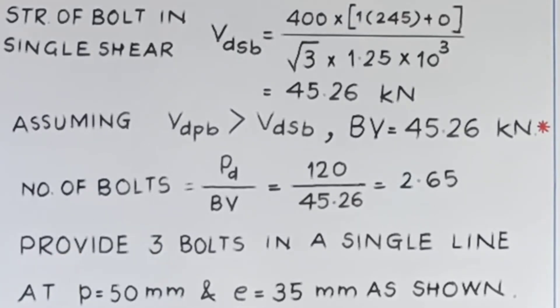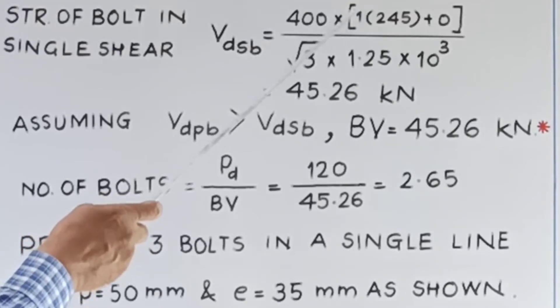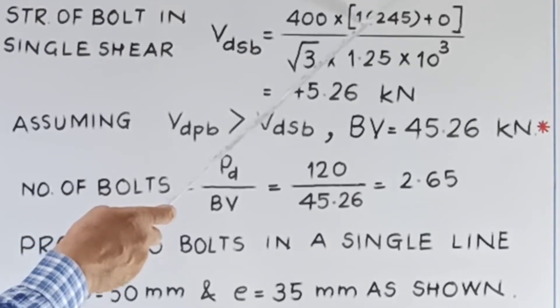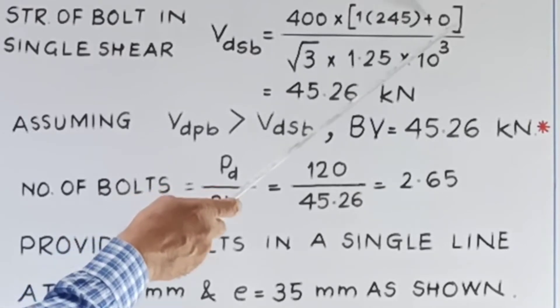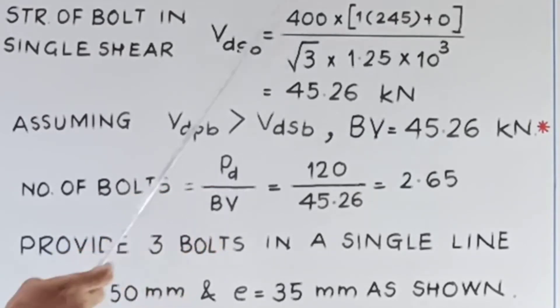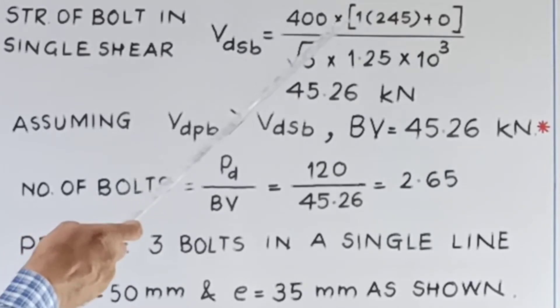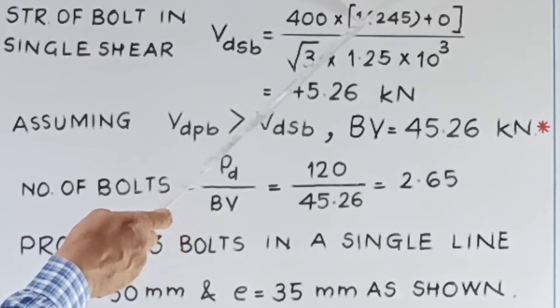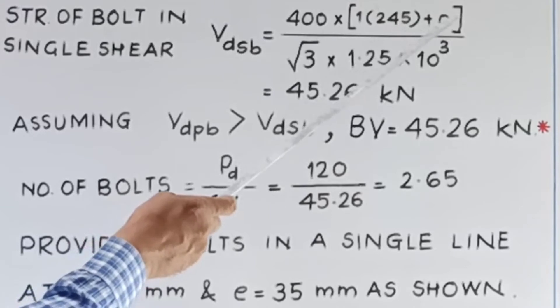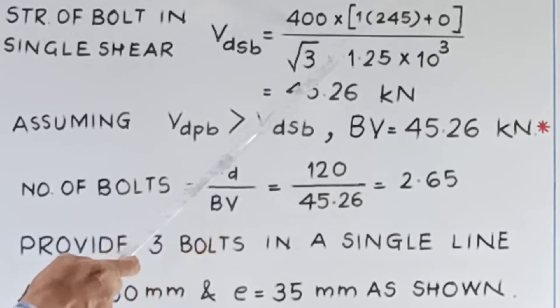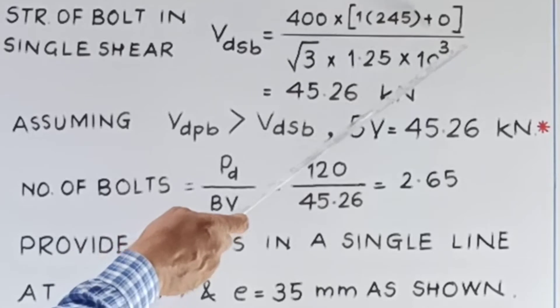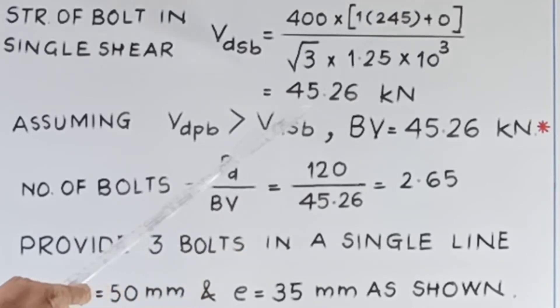So strength of bolt in single shear, that is VDSB. How do we calculate it? FUB upon root 3 into bracket NN into ANB plus NS into ASB divided by gamma MB. Here it is 400 into 1 into 245, this is NN into ANB. NS is 0, so second term is 0, root 3, 1.25 into 10 raised to 3 to convert newton into kilonewton. You will find that this value comes out to be 45.26 kilonewton.